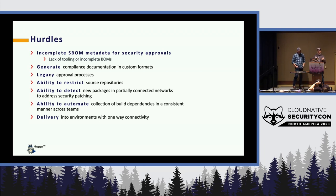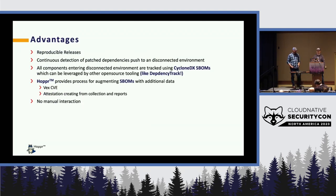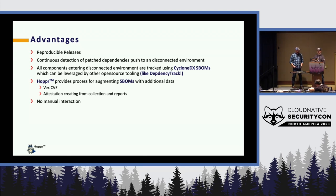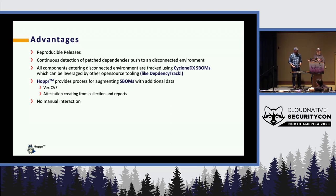This gives us a one-way delivery into an environment with a clear understanding of what's in that environment from an SBOM perspective. The biggest advantage: we have CycloneDX SBOMs for everything in that environment, allowing us to work with existing tooling like Dependency Track. You can track dependency issues that arise in a secure environment on the low side using this inventory. You can augment with additional metadata like VEX, and down the road, validate attestations for all components. All of this is done in a pipeline with no meaningful manual interaction.